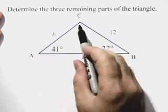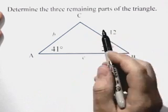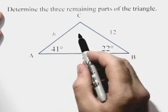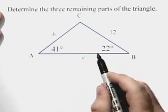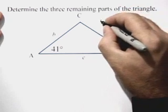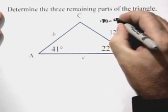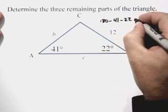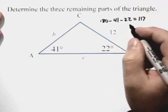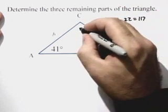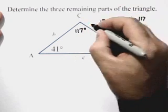We'll start by finding the third angle measure. We know every triangle has 180 degrees. We can find this missing angle measure by subtraction. So 180 minus 41 minus 22 equals 117. So angle C measures 117 degrees.